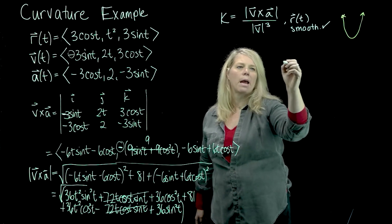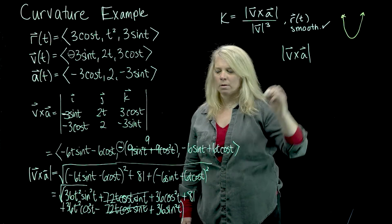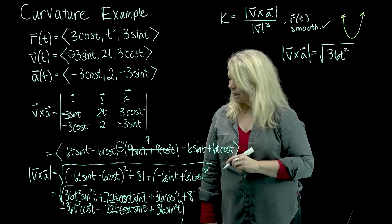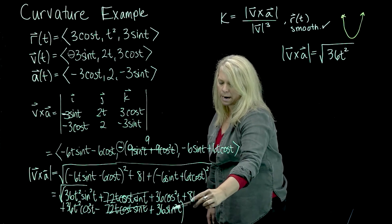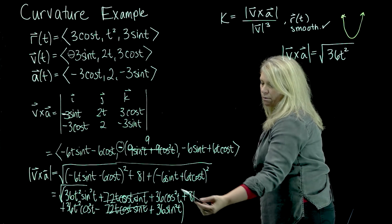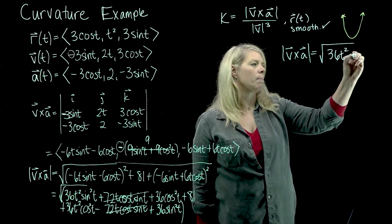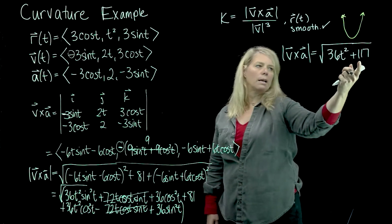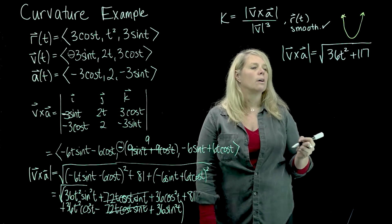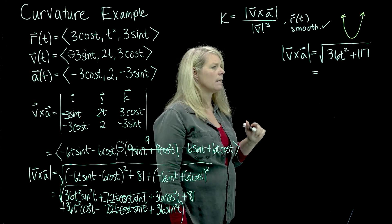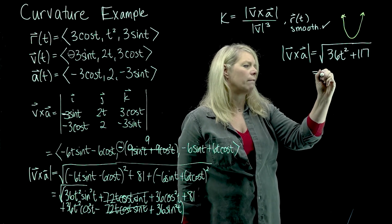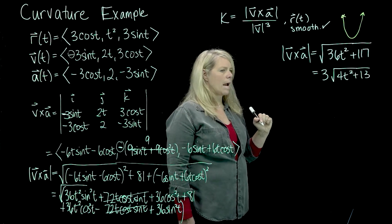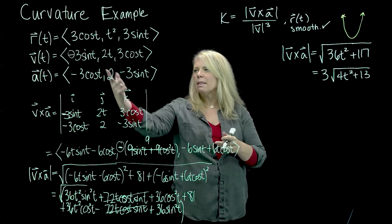My result for the magnitude of v cross a: the t squared terms combine to give me 36t squared inside the radical, those middle terms cancel, the remaining terms combine to give me 36, and plus 81, so 36 plus 81 is 117. Even better, we notice that 9 divides into both of those. I'll factor a 9 out and take the square root of 9, giving a 3 outside the radical, and then square root of 4t squared plus 13. The magnitude of v will be a little simpler: I'll have 9 sine squared t plus 9 cosine squared t, which makes 9, plus 2t squared so plus 4t squared, giving square root of 9 plus 4t squared.